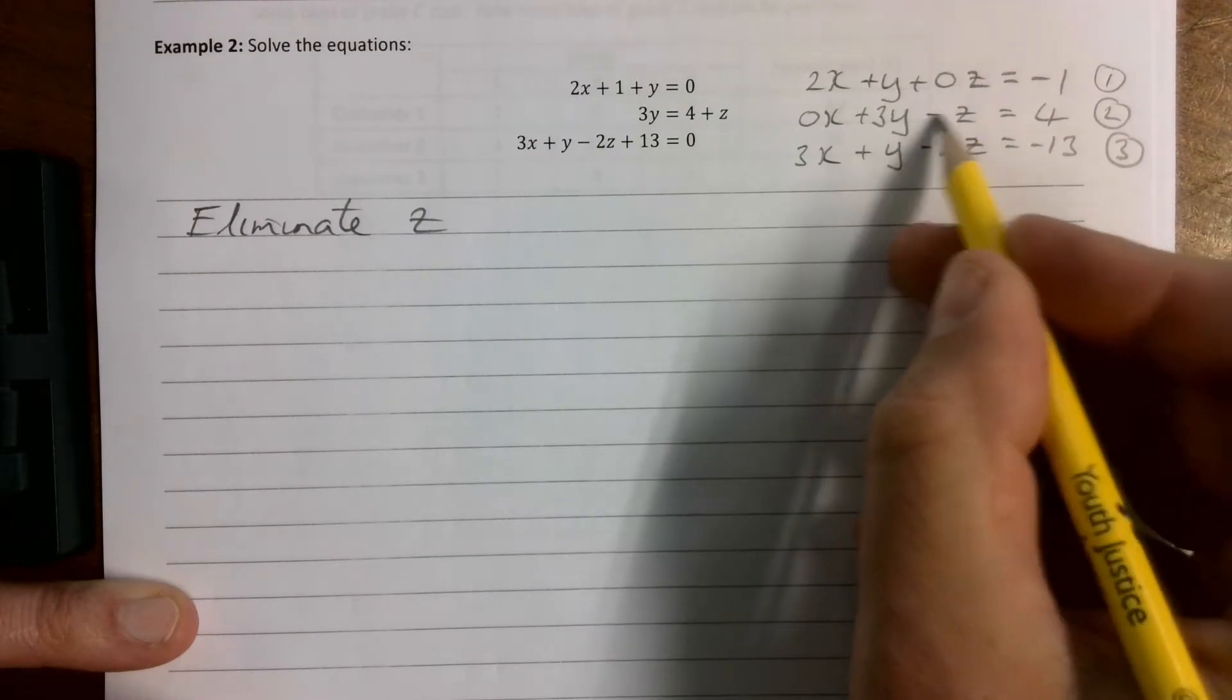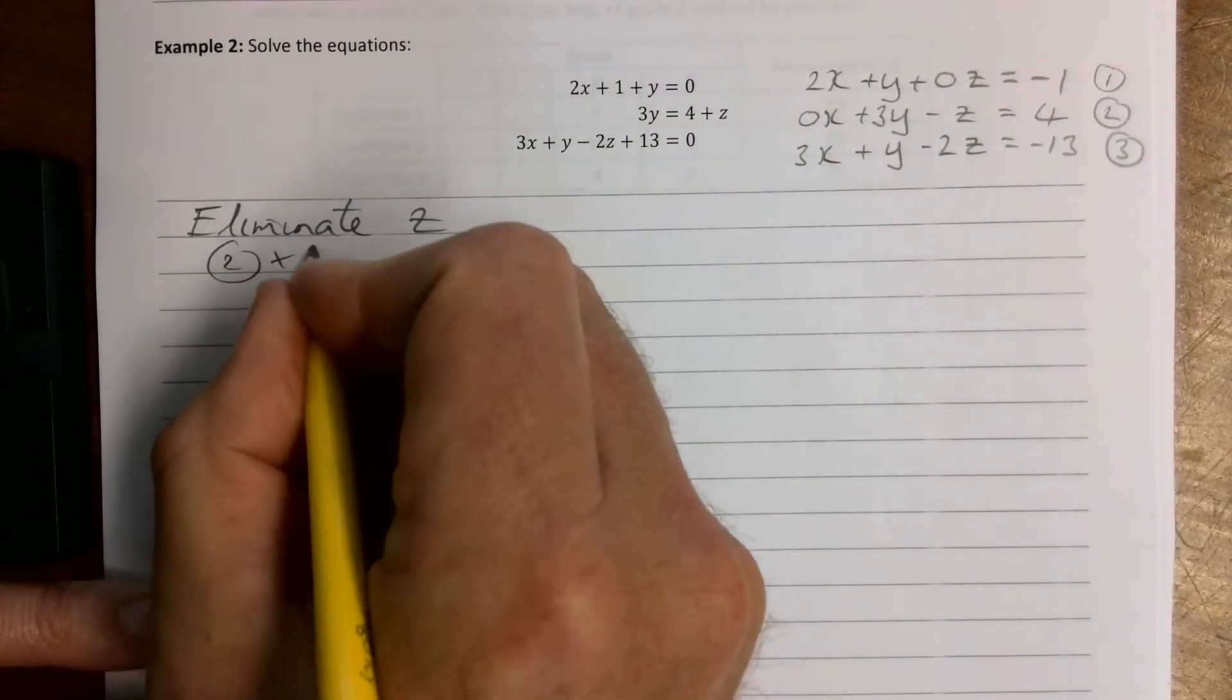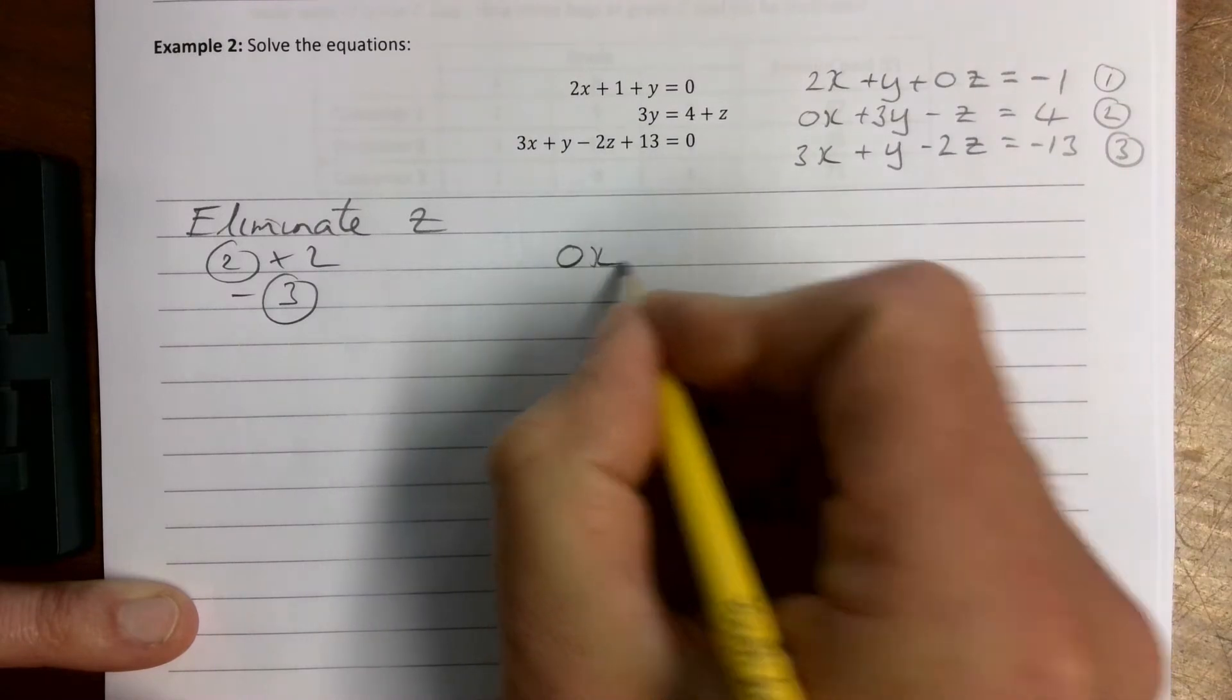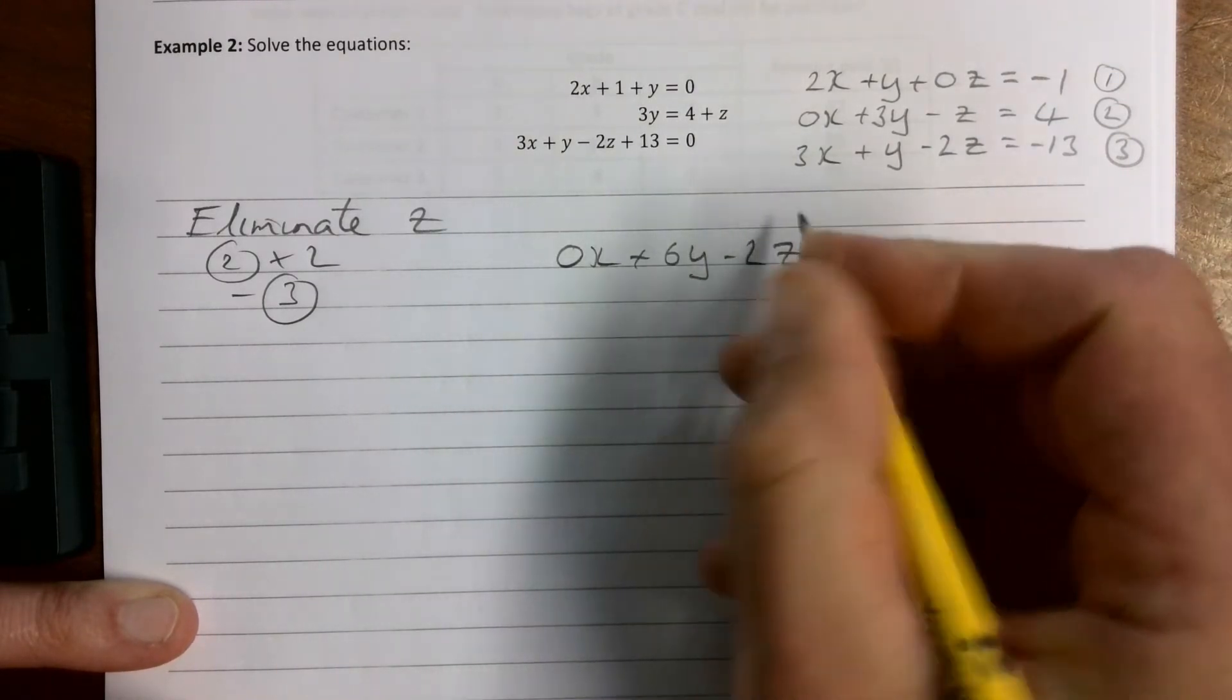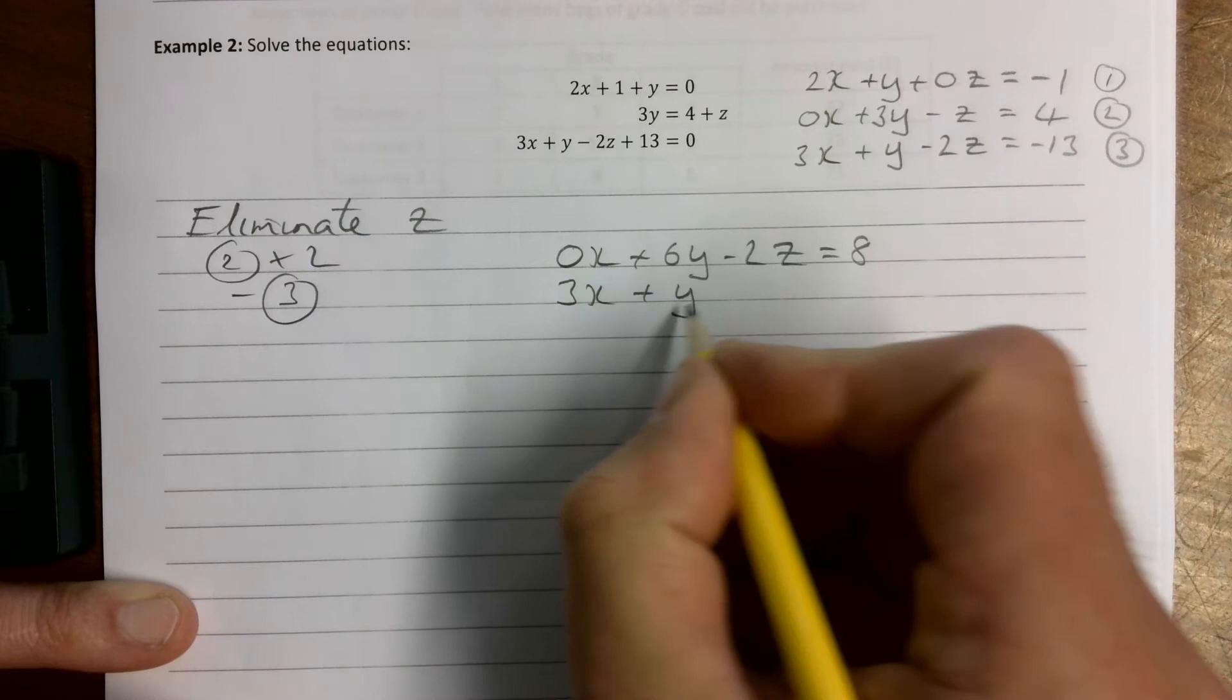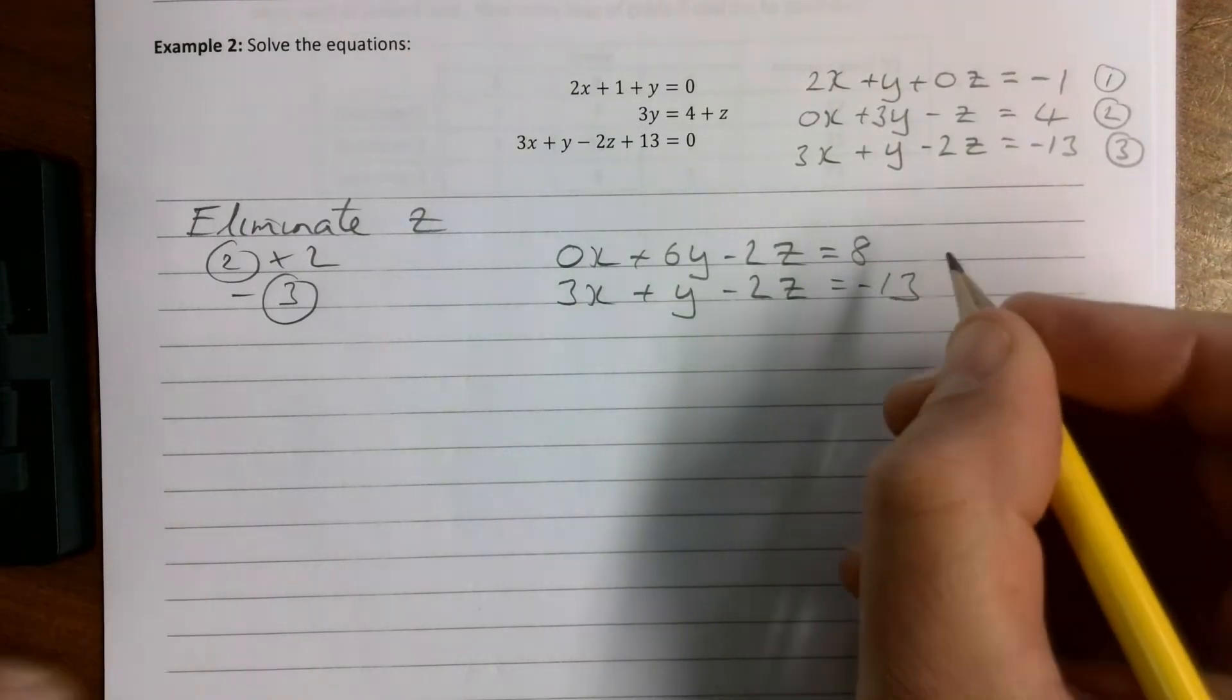So we're going to eliminate z. How are we going to do this? We're going to multiply this one by 2, so it's going to be 2 times by 2, and then we're going to subtract number 3. So number 2 times by 2 is 0x plus 6y minus 2z equals 8. Then we have 3x plus y minus 2z equals minus 13.